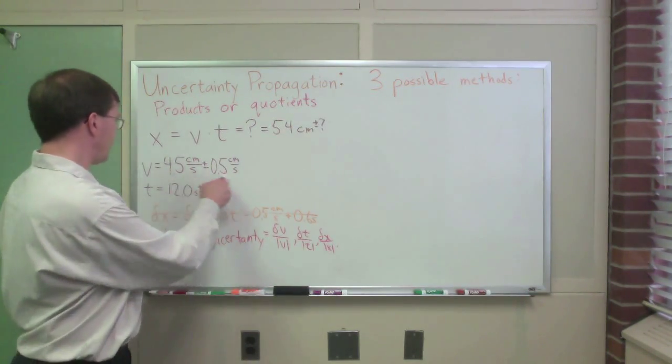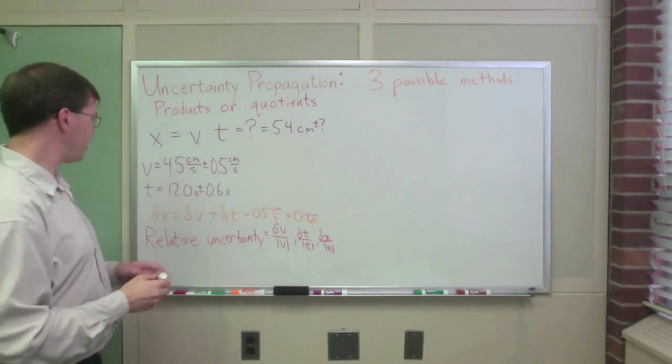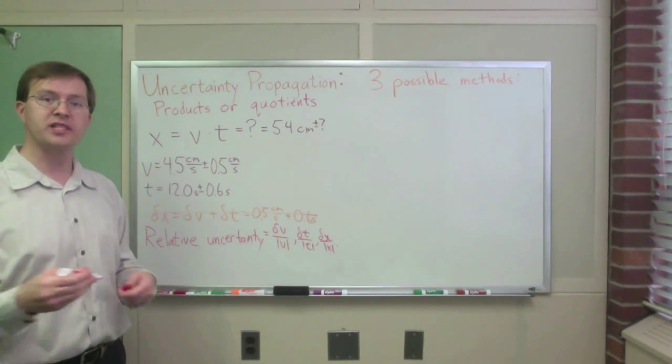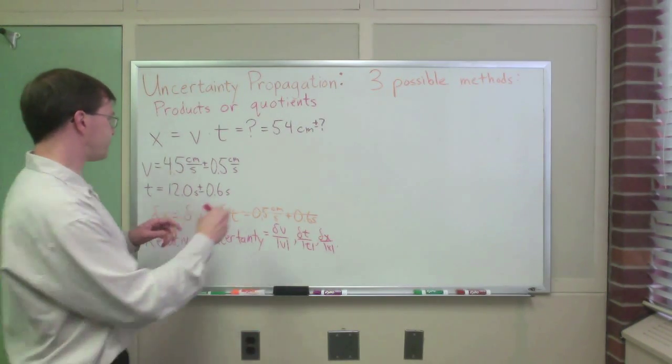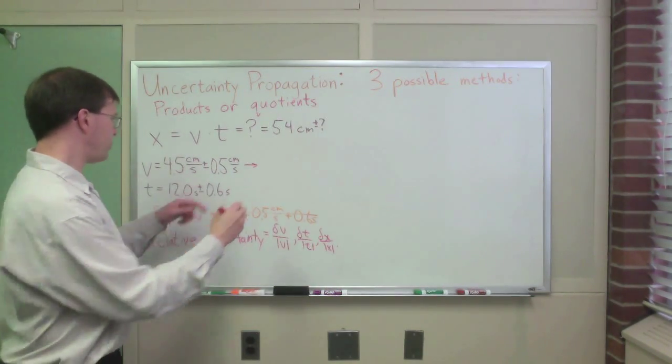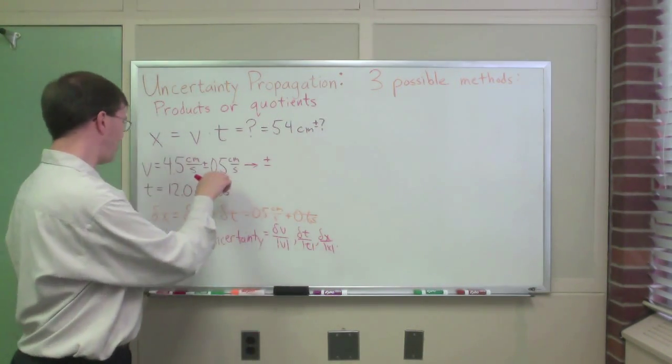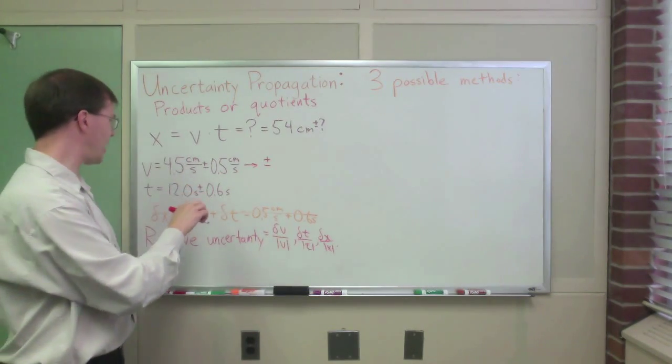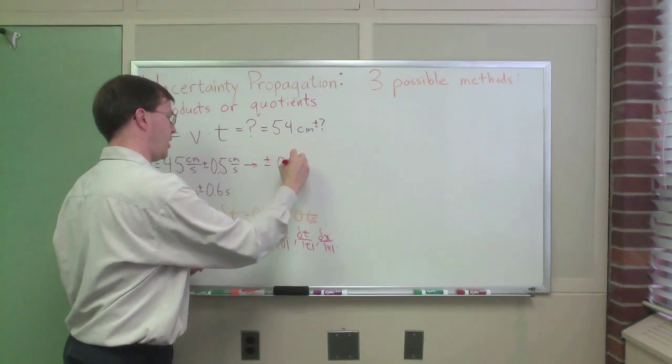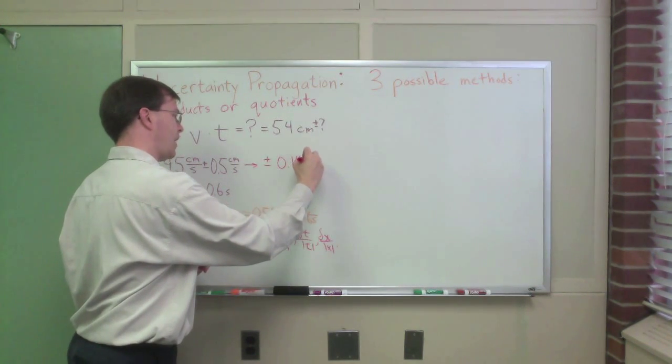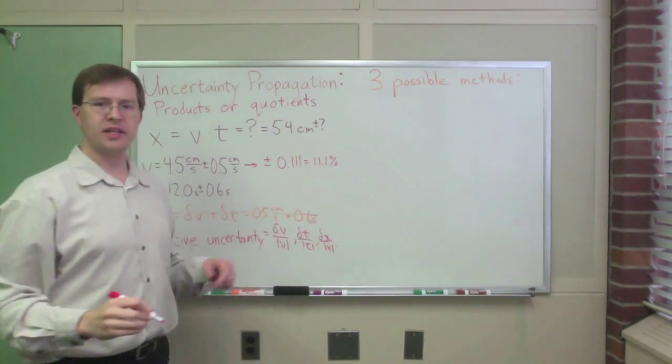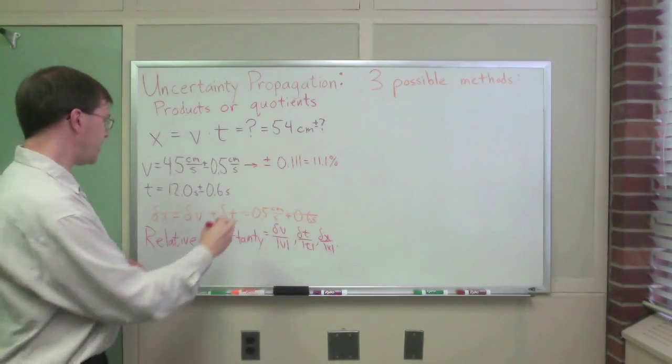I can do that for these things. 0.5 over 4.5. For example, note that in the relative uncertainty, the units always cancel out. This has a relative uncertainty of plus or minus, let's see, 0.5 over 4.5, units cancel out. I get 5 over 45 is 1 ninth. That's about 0.111. Or I might call that 11.1%. That's more digits than I need. It's about 11%.